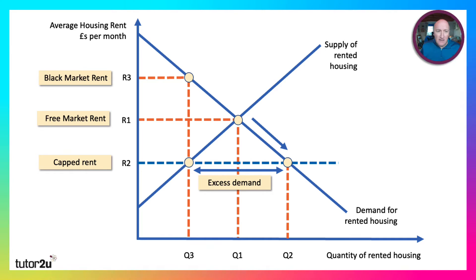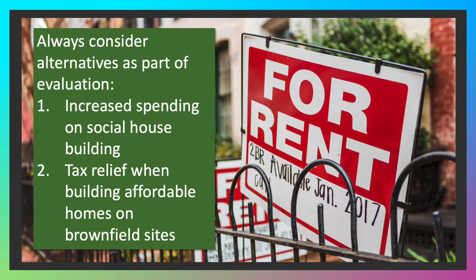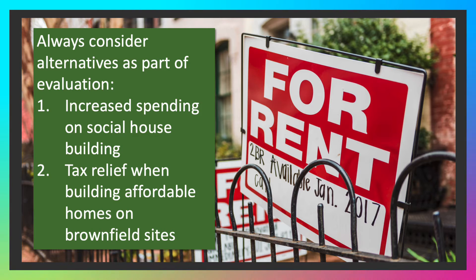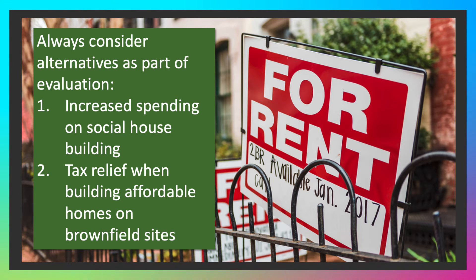So there's the diagram for rented property. The crucial thing is that if some landlords take rented properties off the market, that can make the supply shortage worse at the capped rent level. Whenever you get a question on government intervention in markets — in this case, maximum prices — always consider alternatives as part of the evaluation. Instead of imposing a rent cap, perhaps the government should give local authorities more freedom to borrow money to build social houses, or introduce tax incentives when construction companies build affordable homes on brownfield sites.